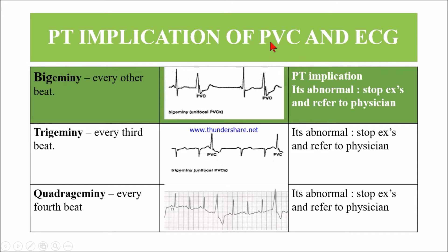PVC means premature ventricular contraction — the ventricular contraction is premature. If it is a single PVC, it is okay. If it is multiple, it is bad. That's why bigeminy, trigeminy, or quadrigeminy are bad — not good for the heart. We need to stop the exercise and refer to the physician.